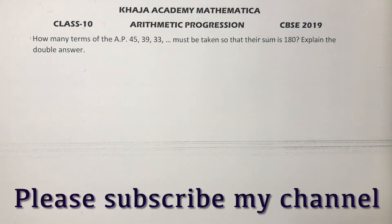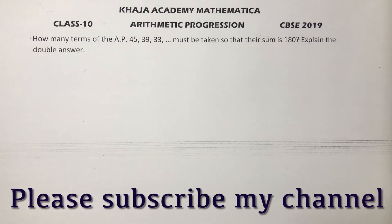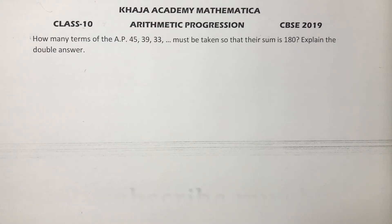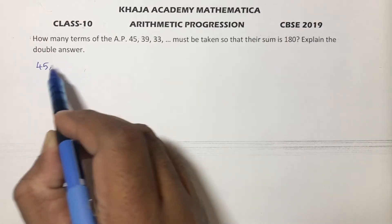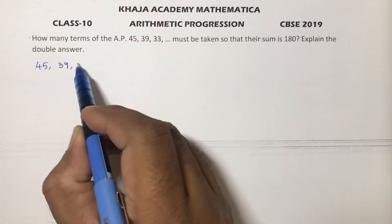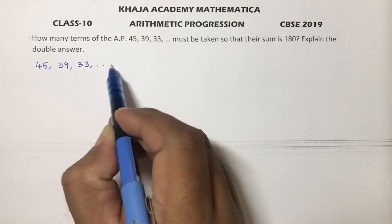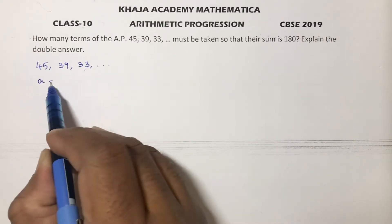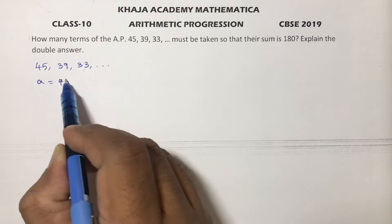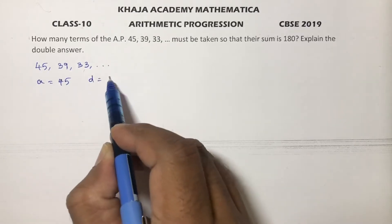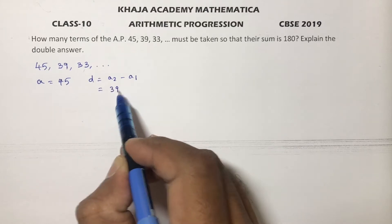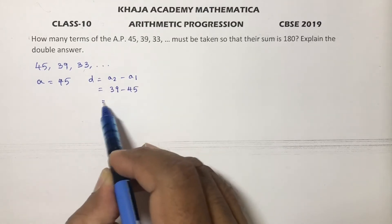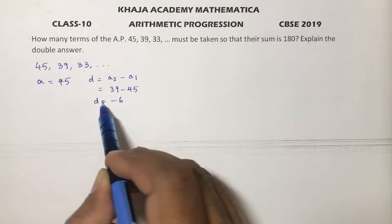How many terms of the AP 45, 39, 33, and so on must be taken so that the sum is 180? The series is 45, 39, 33, so the first term a is 45 and the common difference d is a2 minus a1, which is 39 minus 45, so d equals minus 6.